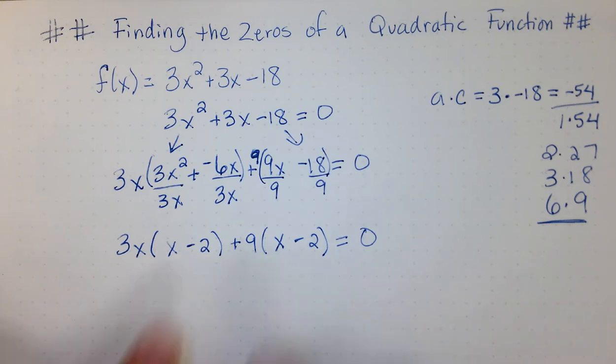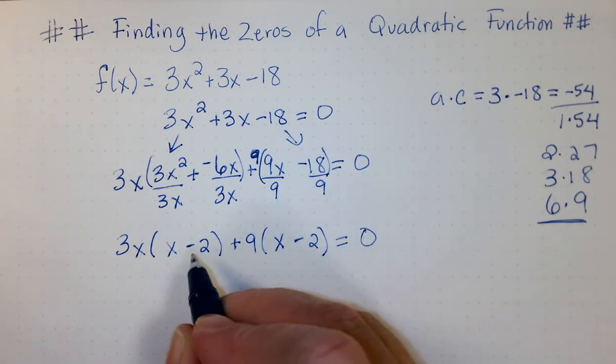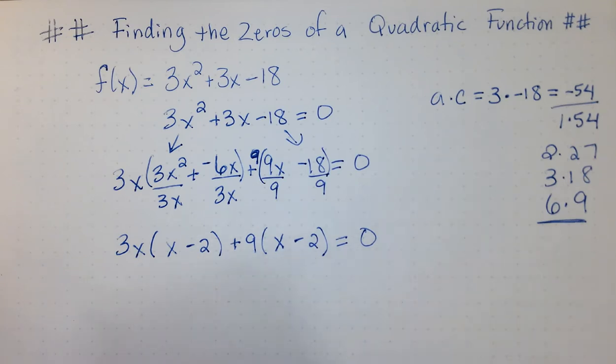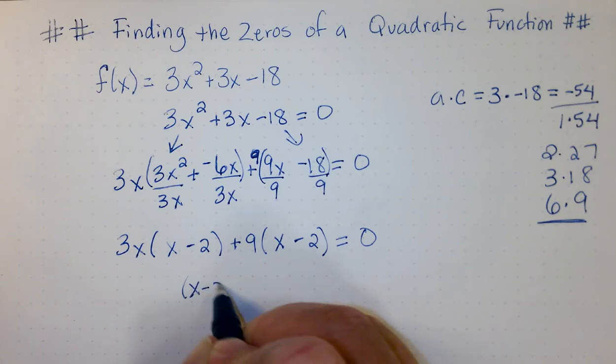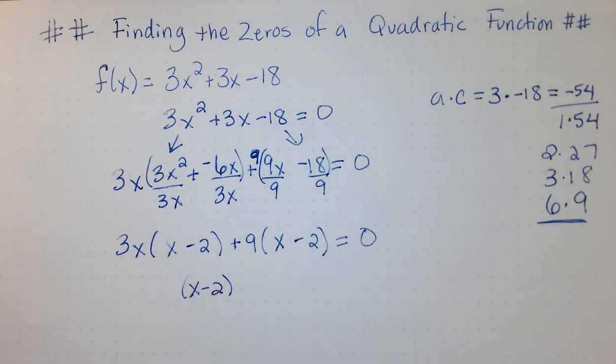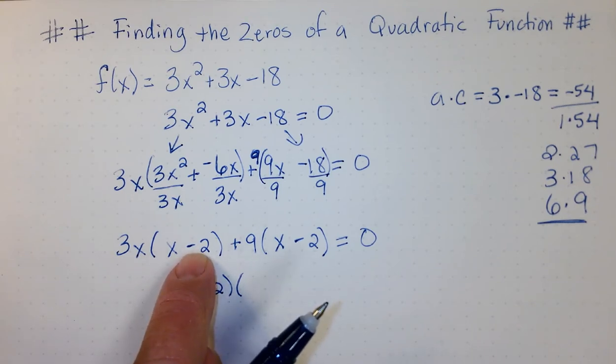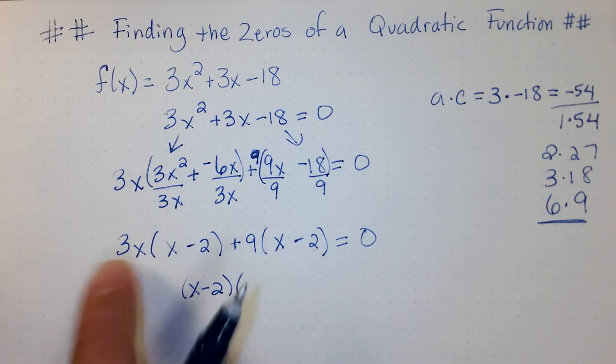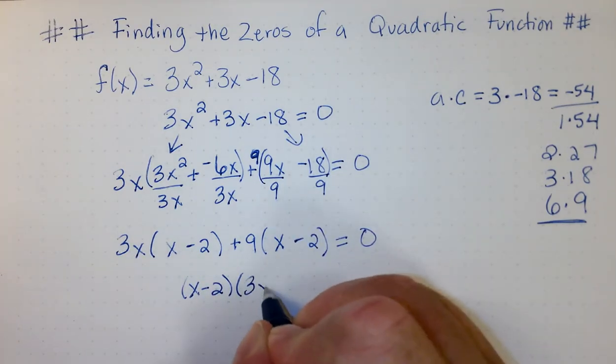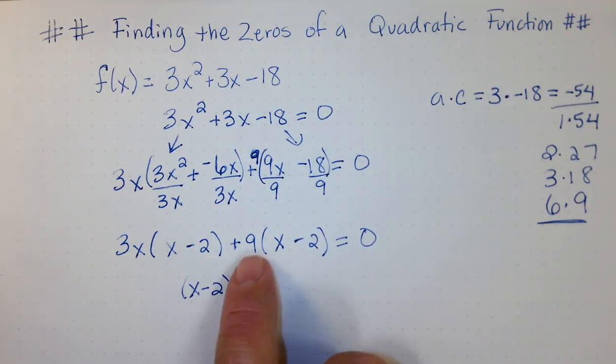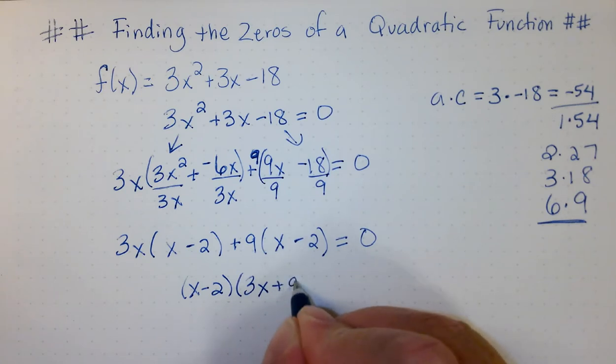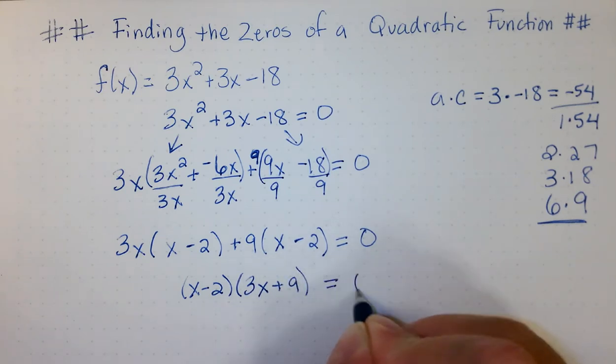Now, we want to write this in the completely factored form. I like to put the common factor here, the x minus 2, in the front. So, I'm going to have x minus 2 go first. And then, if I was to divide out that x minus 2, what would I have remaining? In the first group, I would have 3x. And in the second group, I would have 9. And this is still going to be equal to 0.